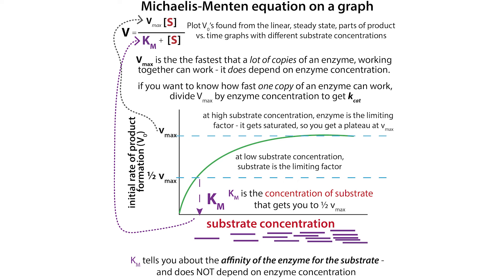In this curve, you have a plateau where you have way more sticks than snappers and you reach your maximal velocity. The concentration it took to get to that half-maximal velocity — half of that maximal velocity — is going to be your Km.